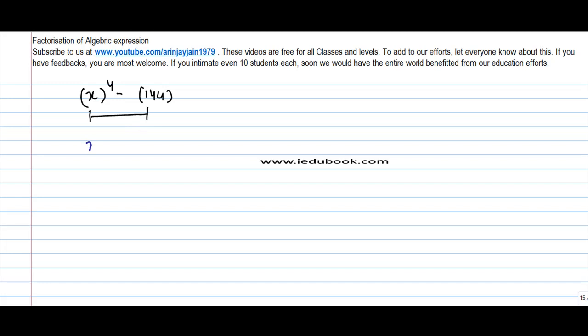This can be written as x squared, squared. We know that a to the power m to the power n is equal to a to the power m times n. If we apply this rule here, x to the power 4 can be written as x to the power 2 to the power 2, or x squared squared.